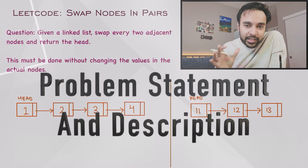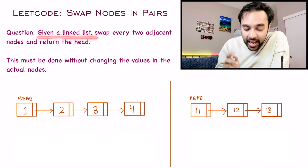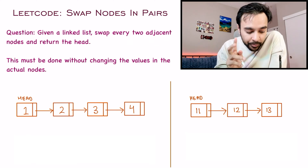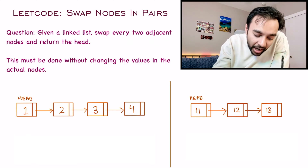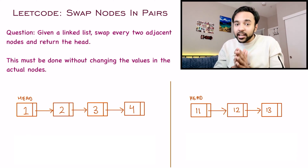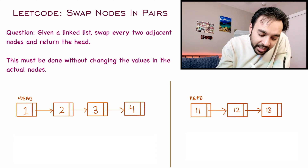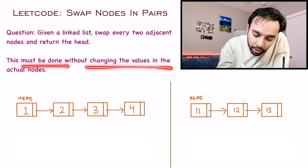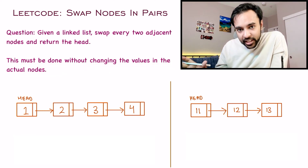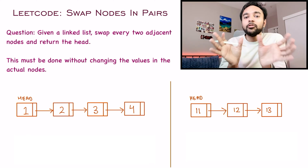Let's make sure we understand the problem statement correctly. In this problem, you are given a linked list and you have to swap every two adjacent nodes. At the end, you have to return the head of this new list in which all of the nodes have been swapped. Along with this, all of these operations must be done without changing the values in the actual nodes.